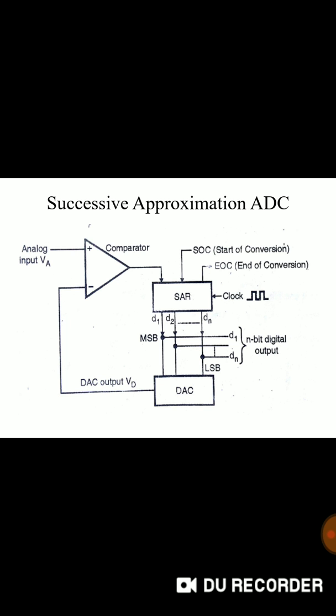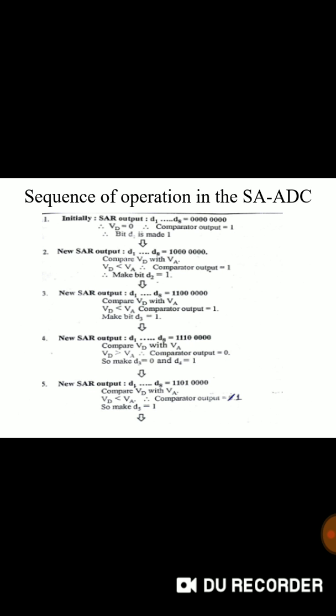This is successive approximation type ADC. A famous one. Analog input is given to comparator's non-inverting terminal. Inverting terminal has DAC output VD. It will be compared and it will be fed to SAR. And depending on the error values or SAR values output will be observed like this.